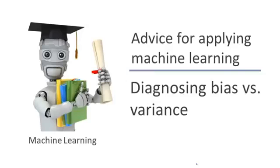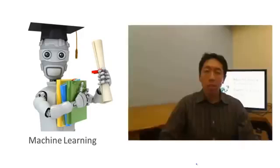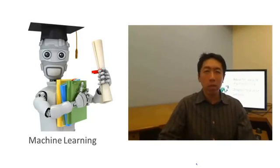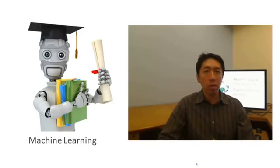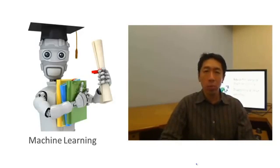If you run a learning algorithm and it doesn't do as well as you were hoping, almost all the time it will be because you have either a high bias problem or a high variance problem — in other words, either an underfitting problem or an overfitting problem. It's very important to figure out which of these two problems you actually have, because knowing this will give a very strong indicator for what are the useful and promising ways to try to improve your algorithm.